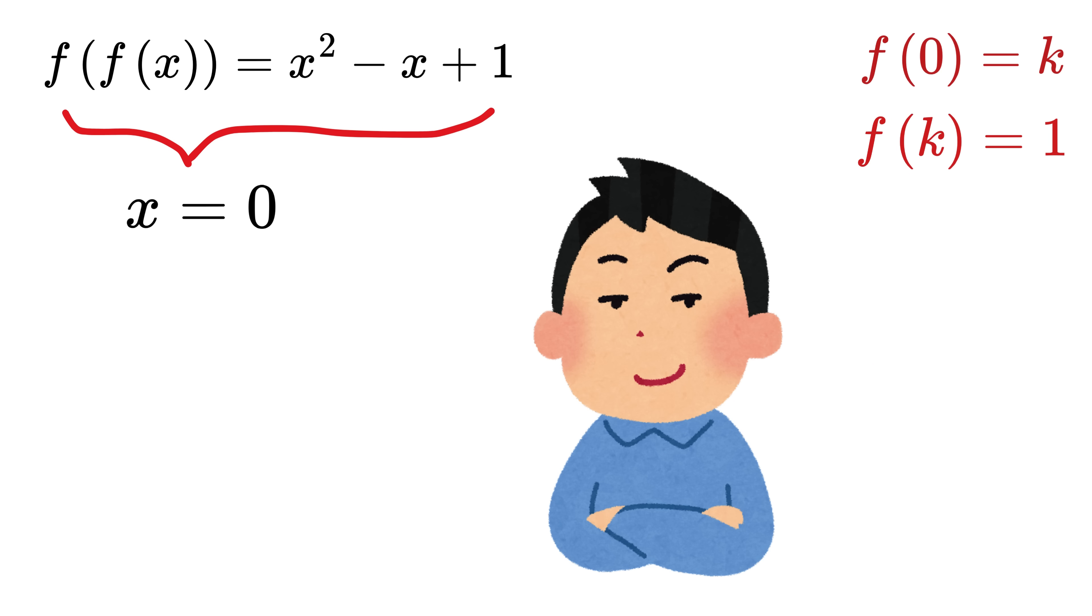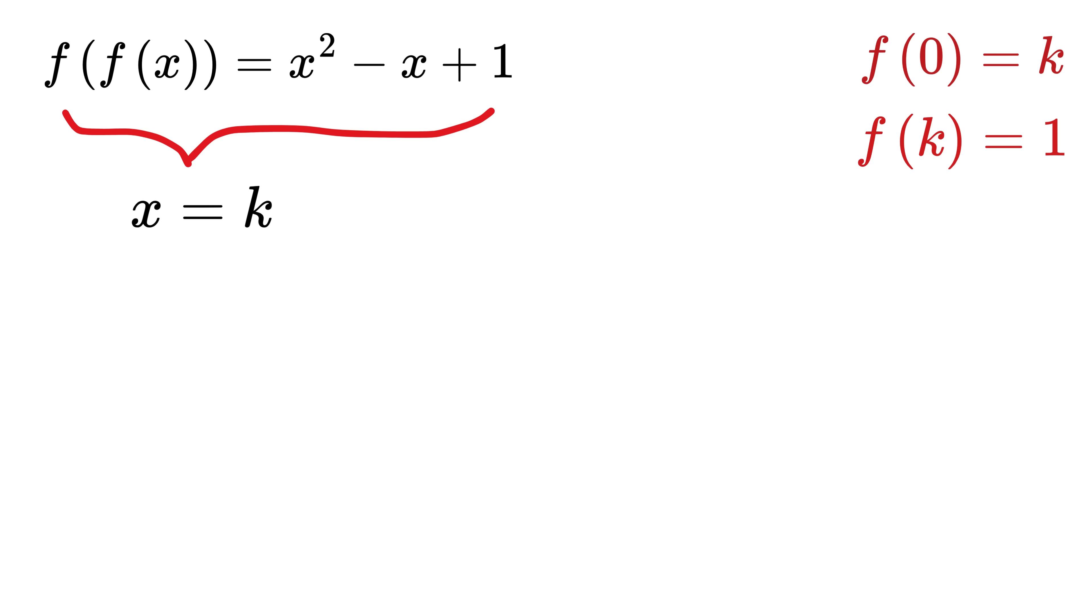Now, let us try to do something interesting. Substitute x as k in this equation. The left side becomes f of f of k, and the right side becomes k square minus k plus 1. We are doing this so that somehow we can find an equation in terms of k, and later solve for k to get f of 0. But hey, f of k is simply 1, and thus the left side becomes f of 1 equals this.